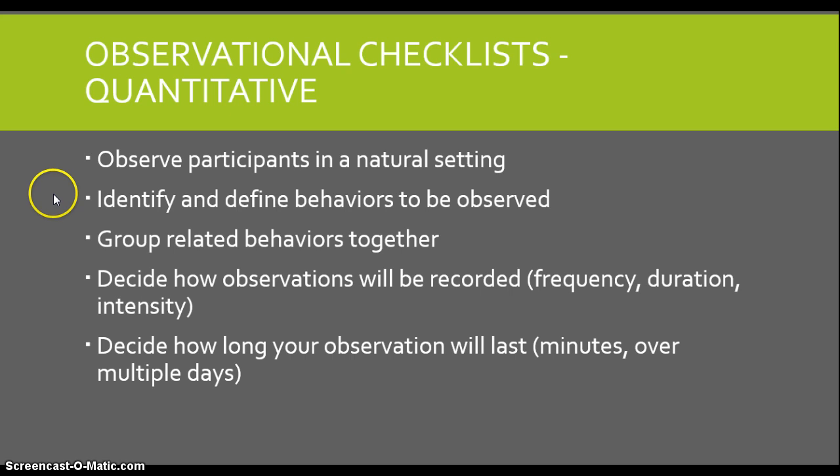After you identify and define the behaviors that you will potentially observe, you should probably group your related behaviors together. In the case of my student, she will probably group the behaviors considered positive together and then group together the negative behaviors. You also need to decide how your observations are going to be recorded — are you interested in recording the frequency by which each behavior occurs, the duration of each behavior, or the intensity of the behavior? These are decisions you need to make before the observation so you know exactly what you're looking for.